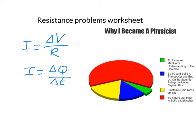To solve the resistance problems worksheet, which has seven problems, you will use these two formulas. You'll have your current, your change in voltage, and your resistance — or you may need to work with charge in coulombs and time in seconds. Make sure you convert your time to seconds before plugging into the equation. These are the two formulas you will need for the resistance problems worksheet.